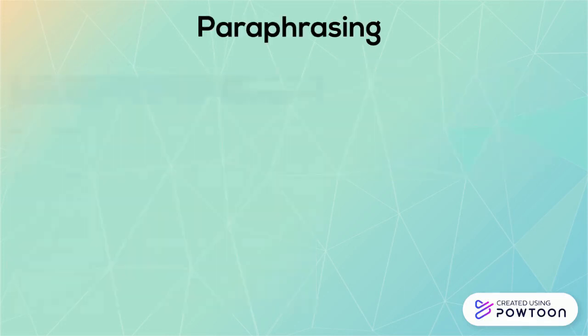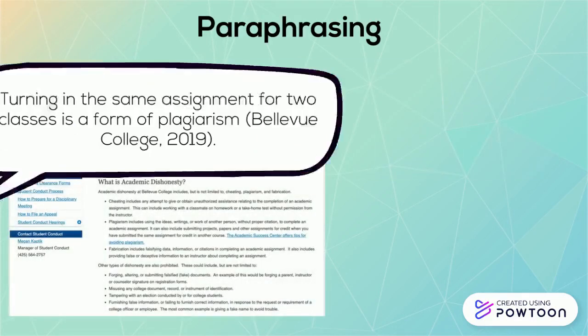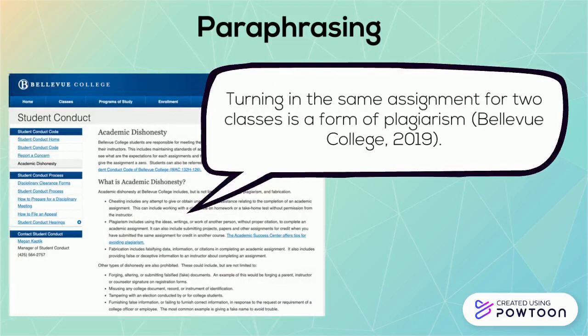Paraphrasing is using information very similar to that in an original source, but without using exactly the words from the text. When you paraphrase, set aside the original content and write the ideas in your own words. Just like with quoting, include both an in-text citation and a reference entry.